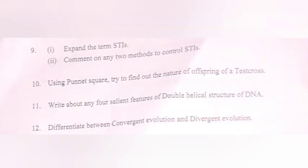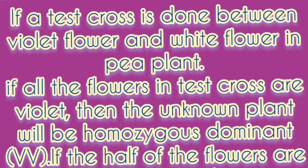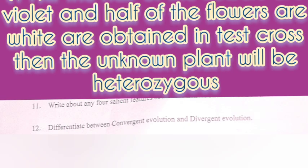Question 10. Using Punnett's square, try to find out the nature of offspring of a test cross. Answer: If a test cross is done between violet flower and white flower in pea plant, and all the flowers in the test cross are violet, then the unknown plant will be homozygous dominant. If half of the flowers are violet and half are white, then the unknown plant will be heterozygous.